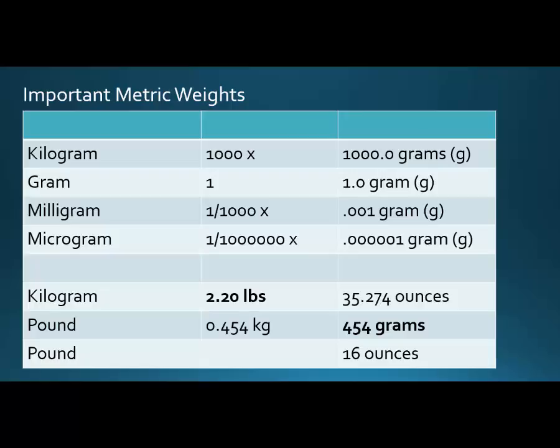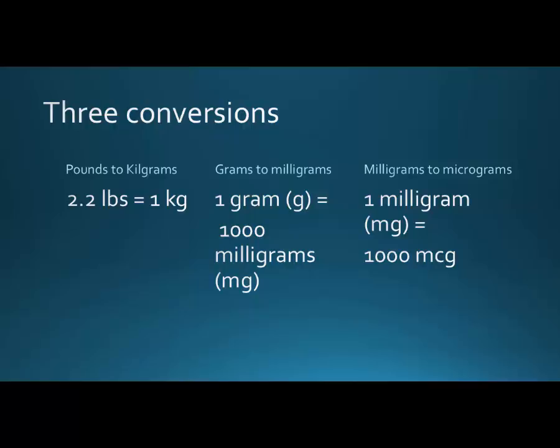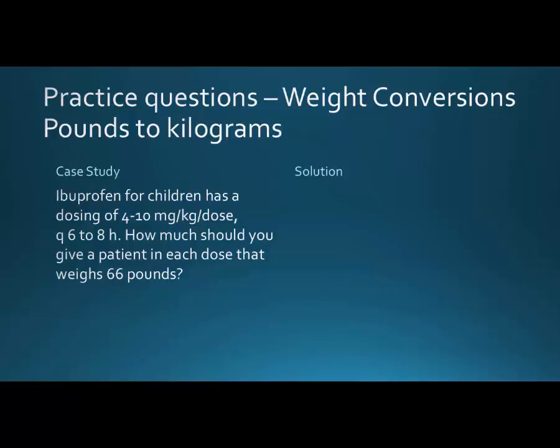Know that 0.454 kilograms or 454 grams are in one pound. Here are the three conversions to go over: 2.2 pounds is one kilogram, one gram is 1,000 milligrams — and I'll show you two different ways to do that — and milligrams to micrograms, same thing, I'll show you two different ways. So let's start: ibuprofen for children has a dosing of 4 to 10 mg per kg per dose every 6 to 8 hours.